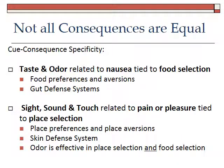I'm going to go into an interesting series of experiments that helped us think about what characteristics of the environment really make it beneficial or not. There was a series of experiments done on cue-consequence specificity. All that means is that not all consequences are equal. We talked earlier about the gut and the skin defense system, and now that's going to come into play. We know that taste and odor of foods are related to nausea, and that is tied to food selection — food preferences and aversions are based on the idea that taste and food are related to nausea. That's called the gut defense system.